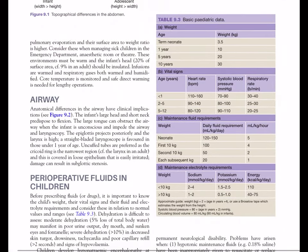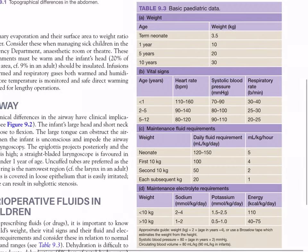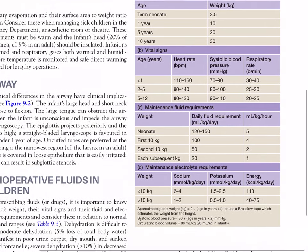This is Table 9.3: basic paediatric data. The approximate range of weights by age are: term neonate 3.5 kg, 1 year 10 kg, 5 years 20 kg, 10 years 30 kg. Vital signs are also given.